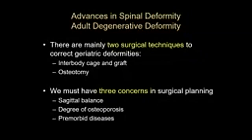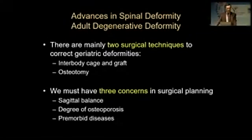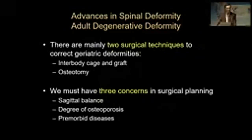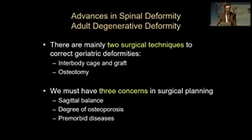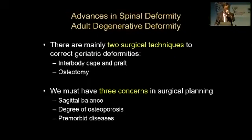We must have three concerns in surgical planning. One is the sagittal balance. The other one is the degree of osteoporosis — if the bone is very osteoporotic, you must take some precautions against this. And premorbid diseases: if the patient has a severe cardiac disease with insufficiency, for instance, then you cannot bleed too much.